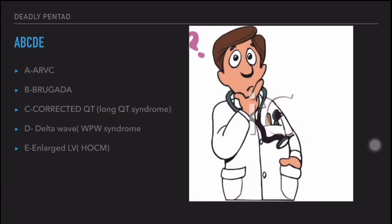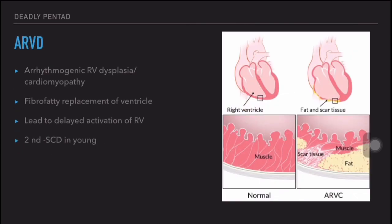Always remember this ABCDE when reading an ECG in a patient presenting with syncope. Coming to the first ECG — ARVD or ARVC, that is Arrhythmogenic Right Ventricular Dysplasia or Cardiomyopathy. It is actually fibro-fatty replacement of the ventricle, which can lead to delayed activation of the right ventricle. In this picture, we can see the right ventricular myocardium is replaced with fibro-fatty tissues.